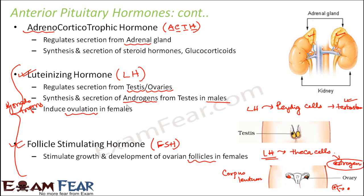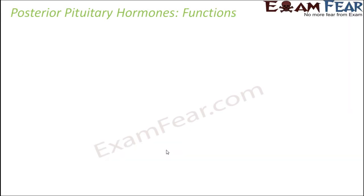LH will induce ovulation and FSH will induce the growth and development of the follicles, be it the ovarian follicle or be it the corpus luteum. So these were all the hormones secreted by the anterior pituitary gland.